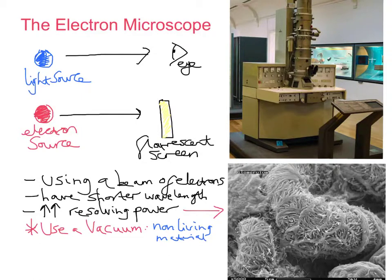The electrons can't be seen as such, so they're focused onto a fluorescent screen which emits visible light when electrons hit it. The screen can then be photographed to give what's called an electron micrograph. That's how we produce one of those images. So let's talk about the two types.